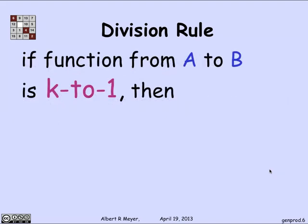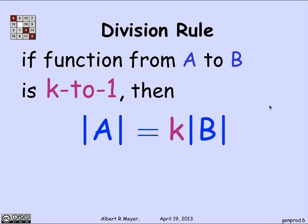So in general, the division rule can be stated this way. If I have a total function from a set A to a set B, domain A codomain B, and this mapping is k to 1, then the cardinality of A is simply k times the cardinality of B. So k to 1 means that exactly k A elements hit each B element. Another way to say it is that there are exactly k arrows into every element of B. So then the number of arrows is simply k times B, and if you have a total function on A, the number of arrows is equal to the size of A, and that's where we get the formula.